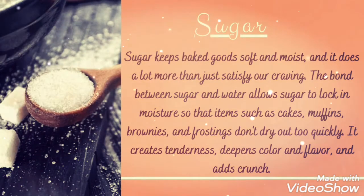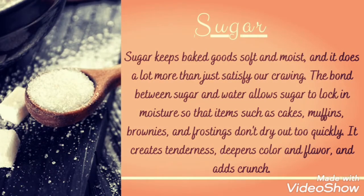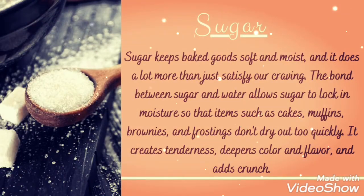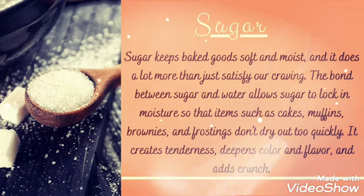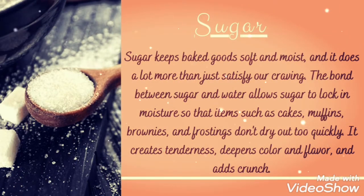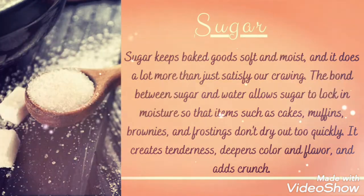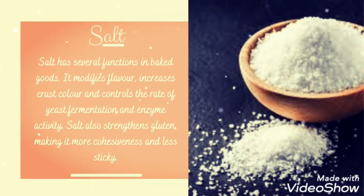Sugar keeps baked goods soft and moist, and it does a lot more than just satisfying our cravings. The bond between sugar and water allows sugar to lock in moisture so that items such as cakes, muffins, brownies, and frostings don't dry out too quickly. It creates tenderness, deepens color and flavor, and also adds crunch.